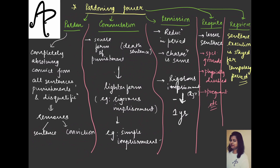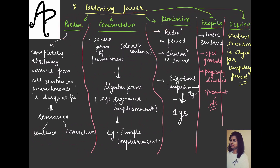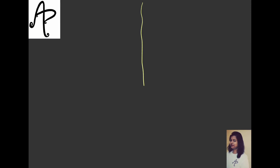To summarize: commutation, remission, and respite are about reducing the punishment in different contexts and methods. Pardon is about complete forgiveness. Reprieve is about a slight delay in the punishment. Now that you are clear with these terms, we can proceed to how we differentiate between the President's and the Governor's power of pardoning. Let's see the difference between President and Governor.